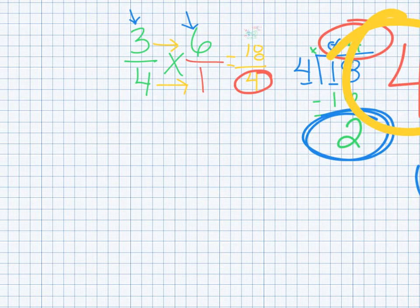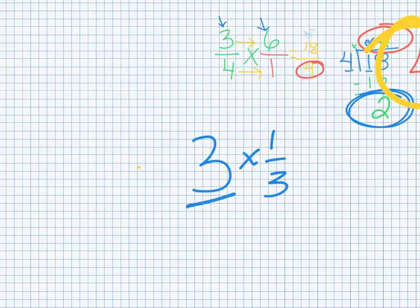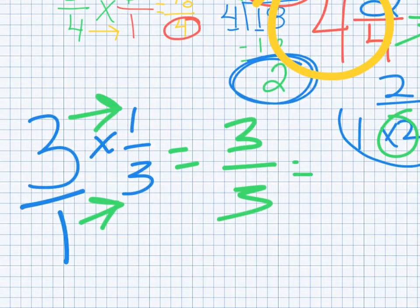Let's try another one. If we did a real quick one, like three times one-third. We do the same thing. We put the three over one. Then we multiply straight across. Three times one is three. One times three is three. Three over three is equal to one. Pretty simple.